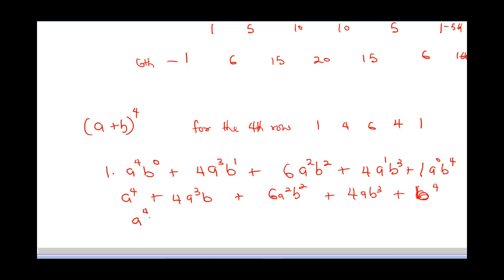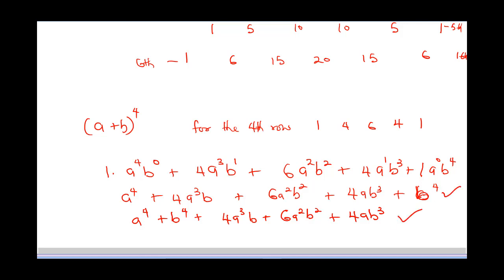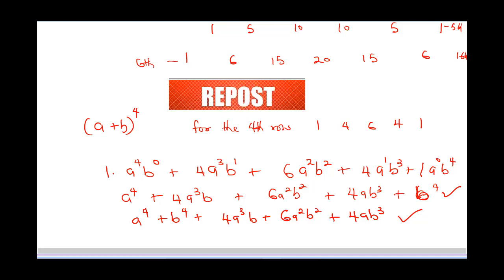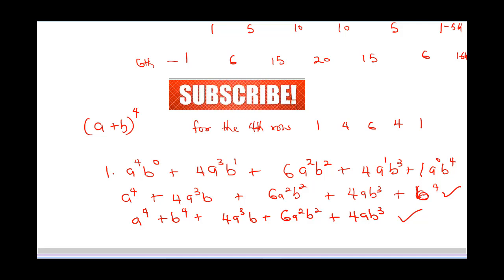So the final answer is: a⁴ + 4a³b + 6a²b² + 4ab³ + b⁴. You can see how Pascal's Triangle makes it easier to expand. If you think this is a good lecture, share it with your friends, like it, comment, and don't forget to hit the subscribe button and notification bell for more quality videos.